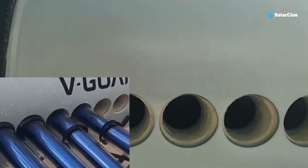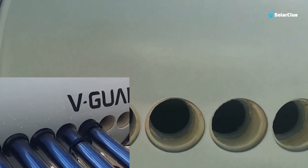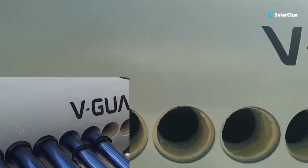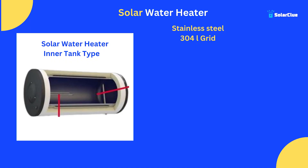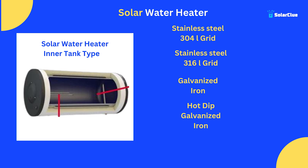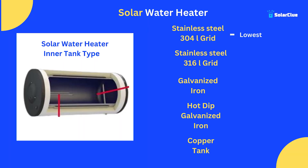The most important part is the inner tank and its coating or protection. Inner tanks come in various varieties: stainless steel 304L grade, stainless steel 316L grade, galvanized iron, hot-dip galvanized iron, and copper tank. Among these, stainless steel 304L grade is the lowest quality and copper tank is the highest quality. The ranking I mentioned goes from lowest to highest.